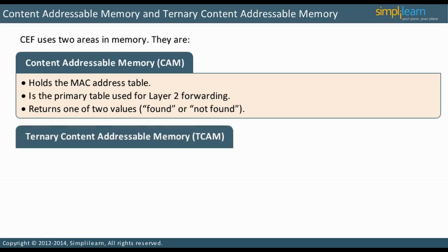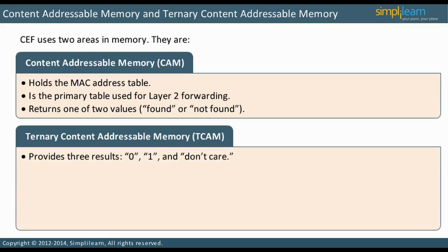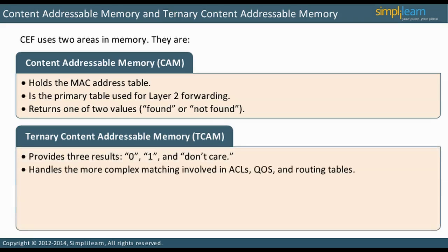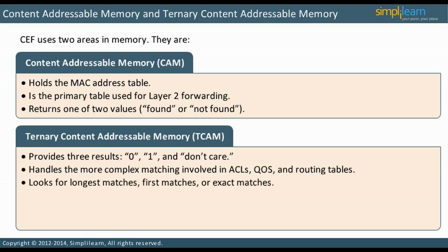Ternary Content Addressable Memory, or TCAM, is different. TCAM processing returns three values: zero, one, or don't care. This range of results is required for the more complex matching involved in ACLs, QoS, and Routing Tables. For example, a lookup can be initiated for longest matches, first matches, or exact matches.